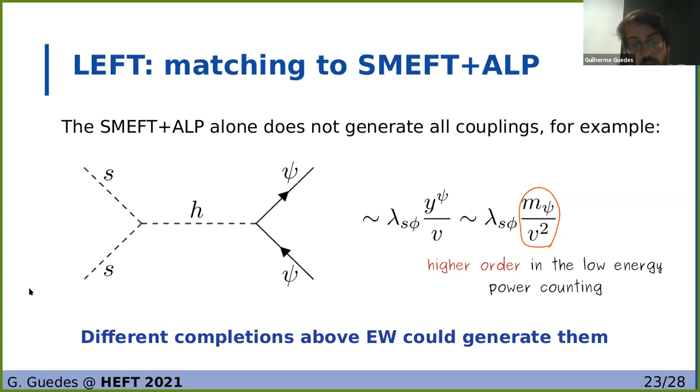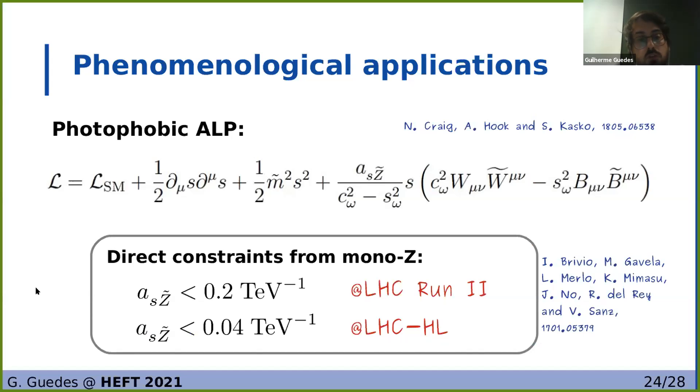So then we can match the LEFT to the SMEFT plus ALP and we see that we do not generate all the couplings that we've been talking about. For instance, at tree level one could think that we would generate s squared psi-bar psi, but it is higher order in the low energy power counting. But let me stress that different completions, so considering for instance a heavy scalar, so different completions above the electroweak scale could in principle generate all these couplings.